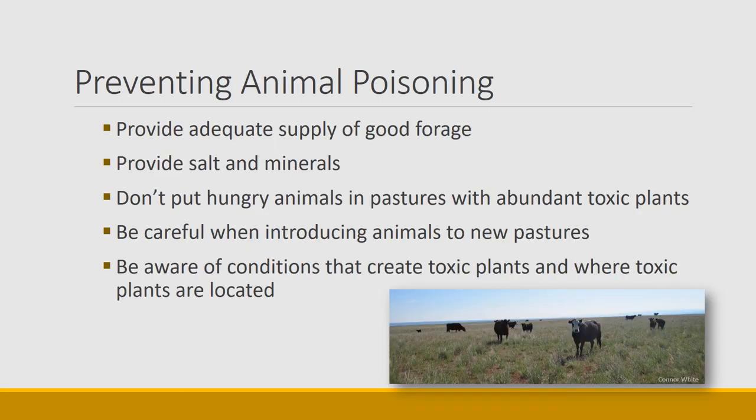Those are some of the plant compounds that cause problems in livestock management or wildlife habitat in the West. What can you do about it? The first thing is to make sure to provide an adequate supply of good forage — we don't usually have problems with poisonous plants if there's plenty of forage alternatives. Make sure to provide salt and minerals, as those can help animals deal with toxins. Don't put hungry animals in pastures with abundant toxic plants — those massive die-offs of sheep were caused when hungry animals were put in pastures with abundant halogeton. Introduce animals to new pastures when they're in good body condition and slowly, so they can learn about plants.